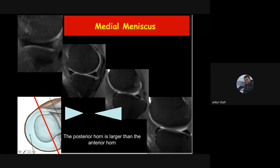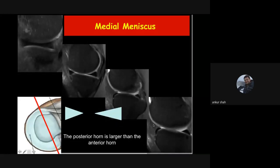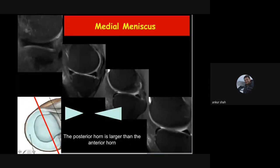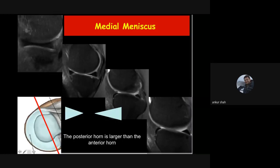The medial meniscus has anterior and posterior horns which are asymmetrical in size — the anterior horn is smaller compared to the posterior horn throughout all images. If you see a medial meniscus where the posterior horn is almost the same size as the anterior horn or smaller, you should think there is a meniscal tear and search for it. Most likely there could be a flap tear — a small loss of meniscal substance giving a smaller appearance.